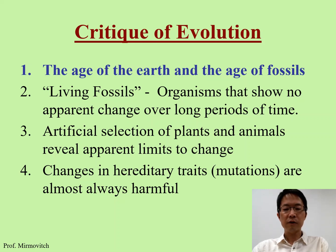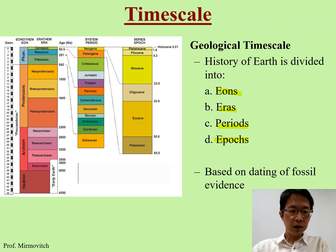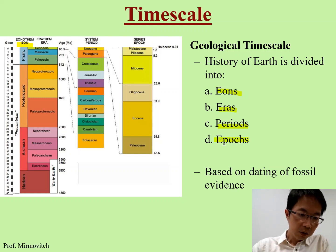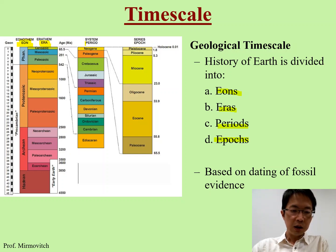The first critique concerns the age of the earth and the age of the fossil. The history of the earth is divided into eons, eras, periods, and epochs. We divide the earth into four eons — you don't need to know the names of the four eons. Each eon is divided into different eras, and only the most recent eon is divided into different periods.